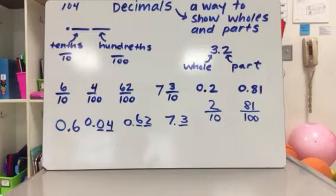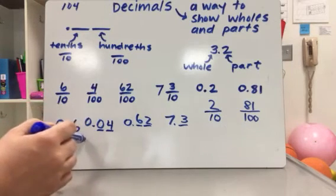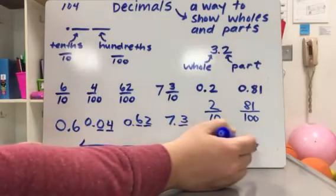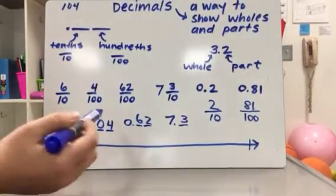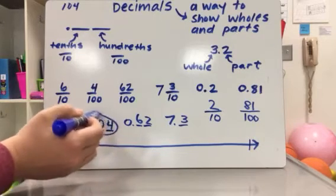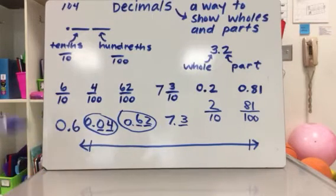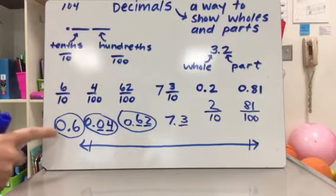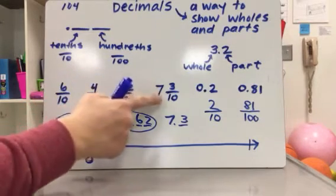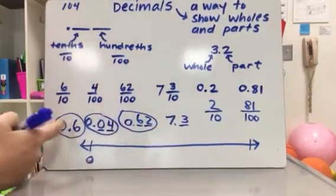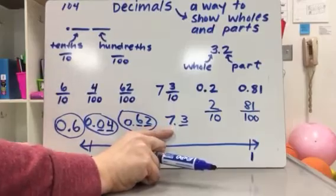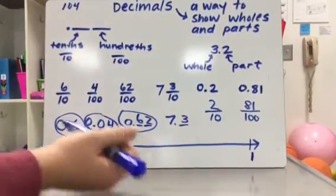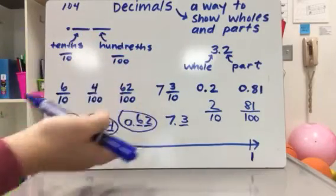That helps when you need to compare decimals or put decimals on a number line, which is what we're going to do now. I'm going to put two decimals on the number line — actually all three of them since one is just tenths. The whole tells us where to start, so I'm going to start at zero and put the next whole, which is one. If I were plotting seven and three tenths, I'd start at seven and end at eight. Since I'm going to be putting tenths and hundredths, I'll partition my number line into 10 parts.